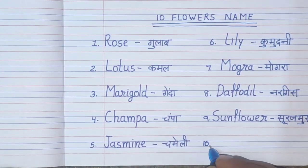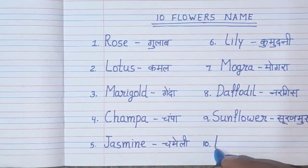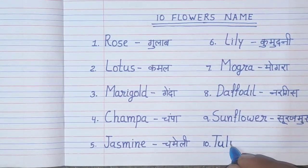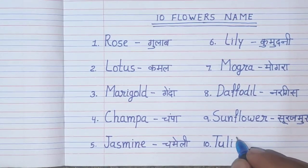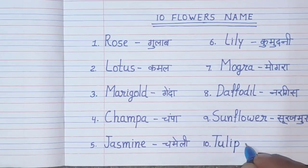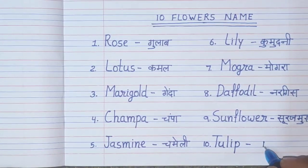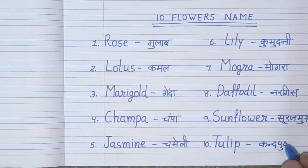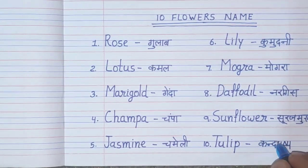Number 10. T-U-L-I-P. Tulip. Tulip means Kandpuss.